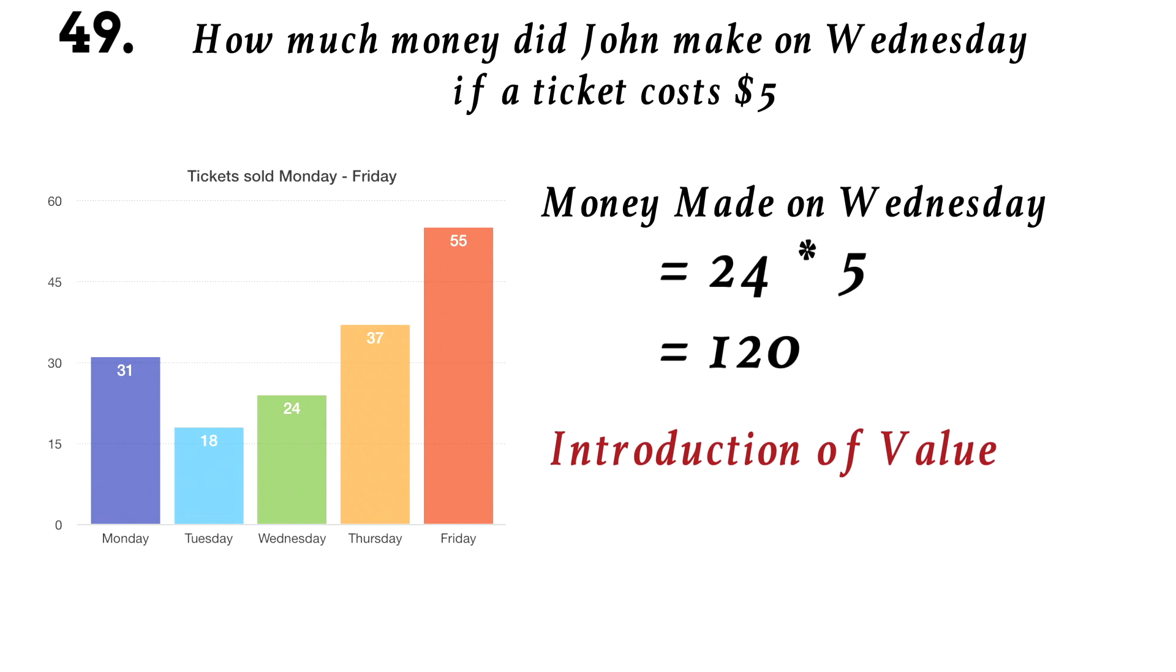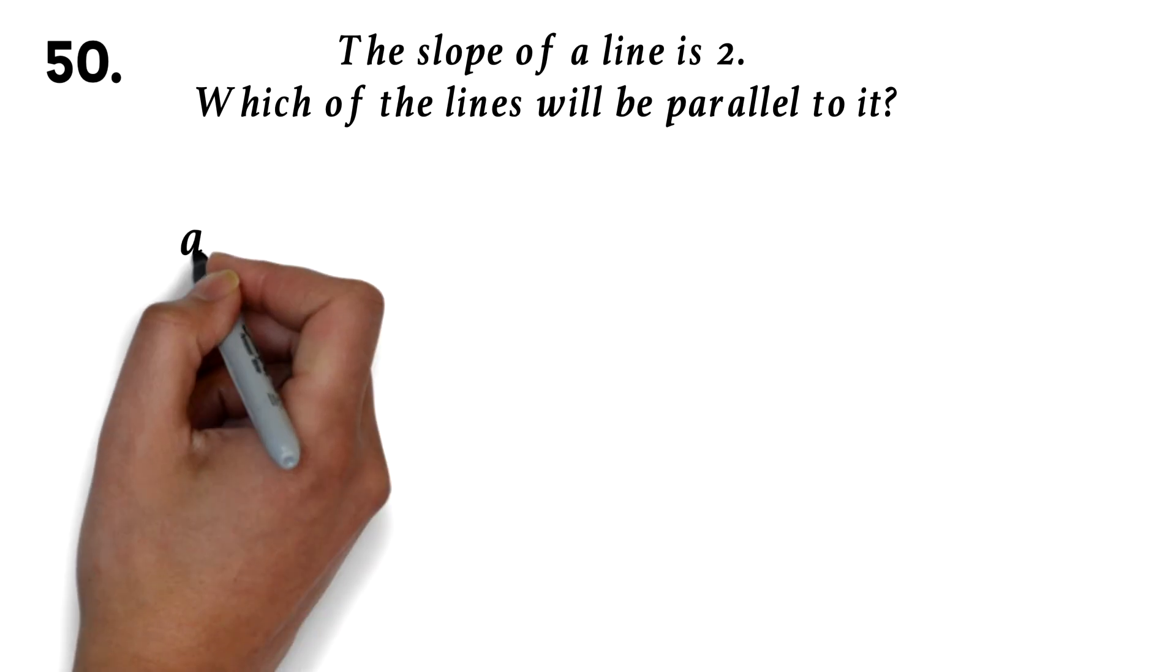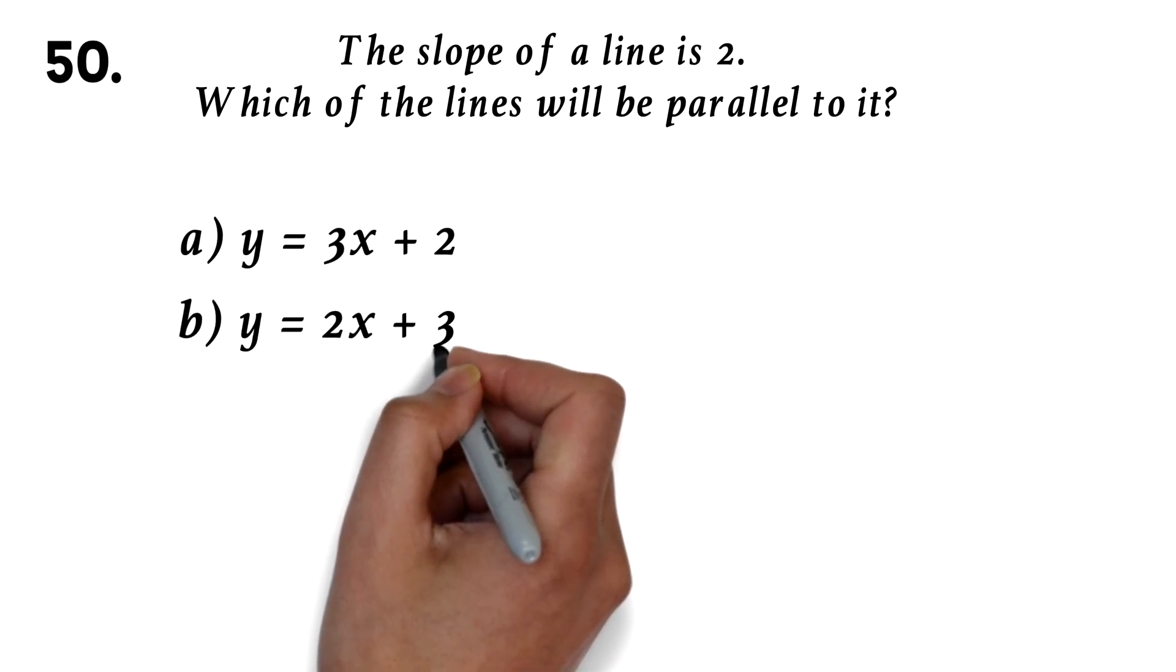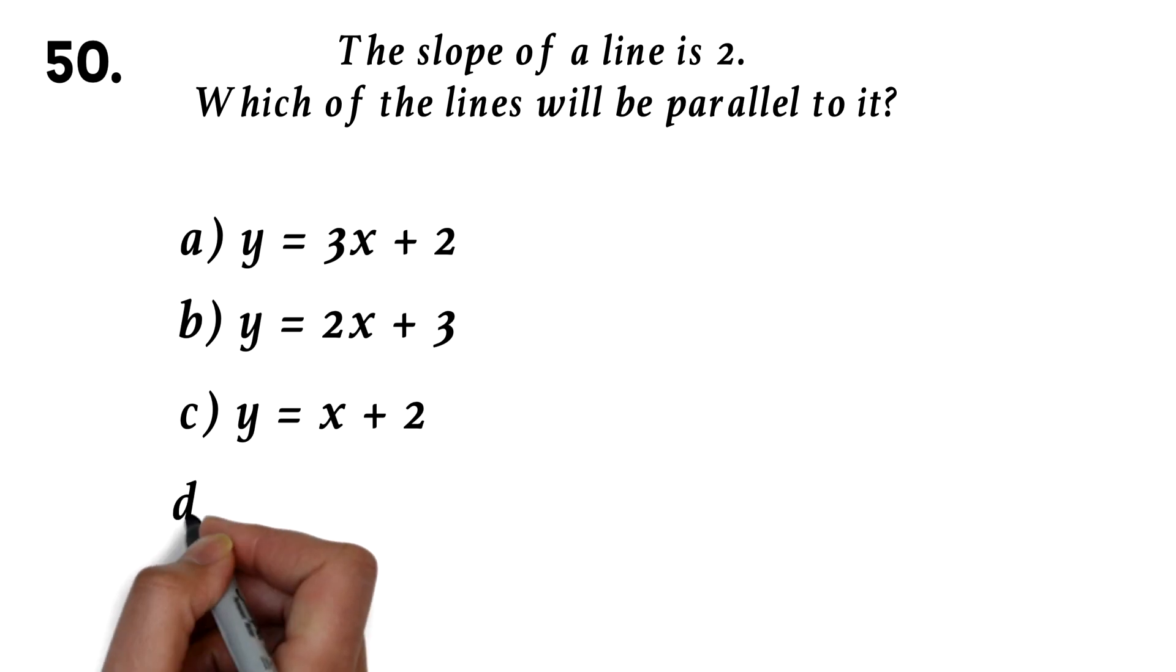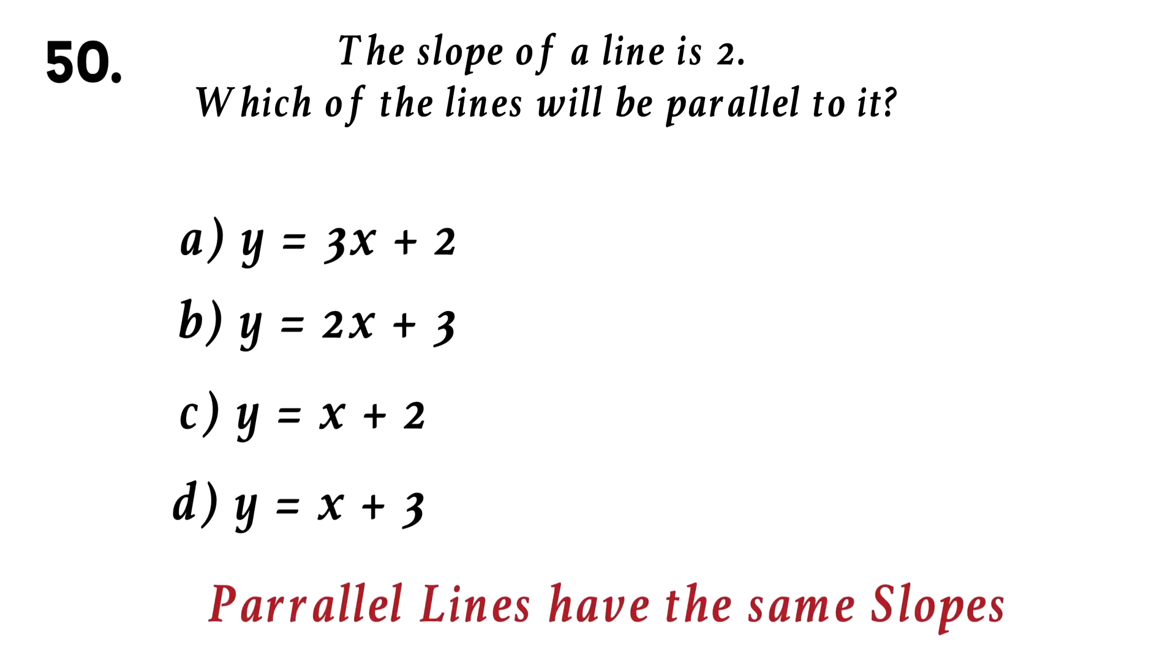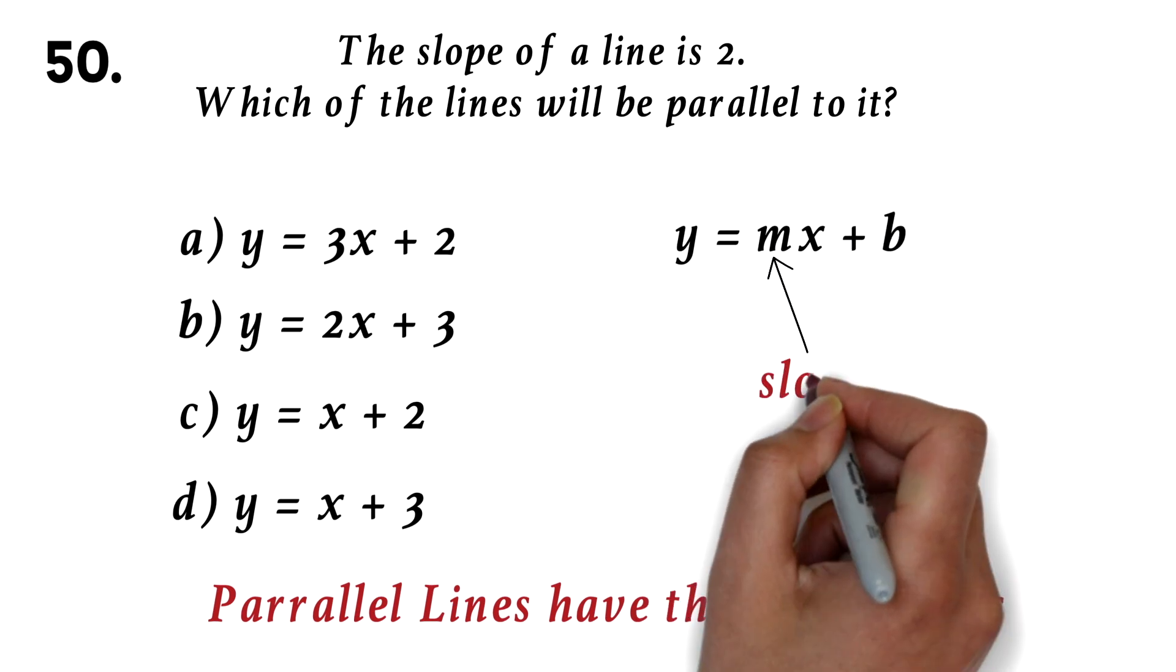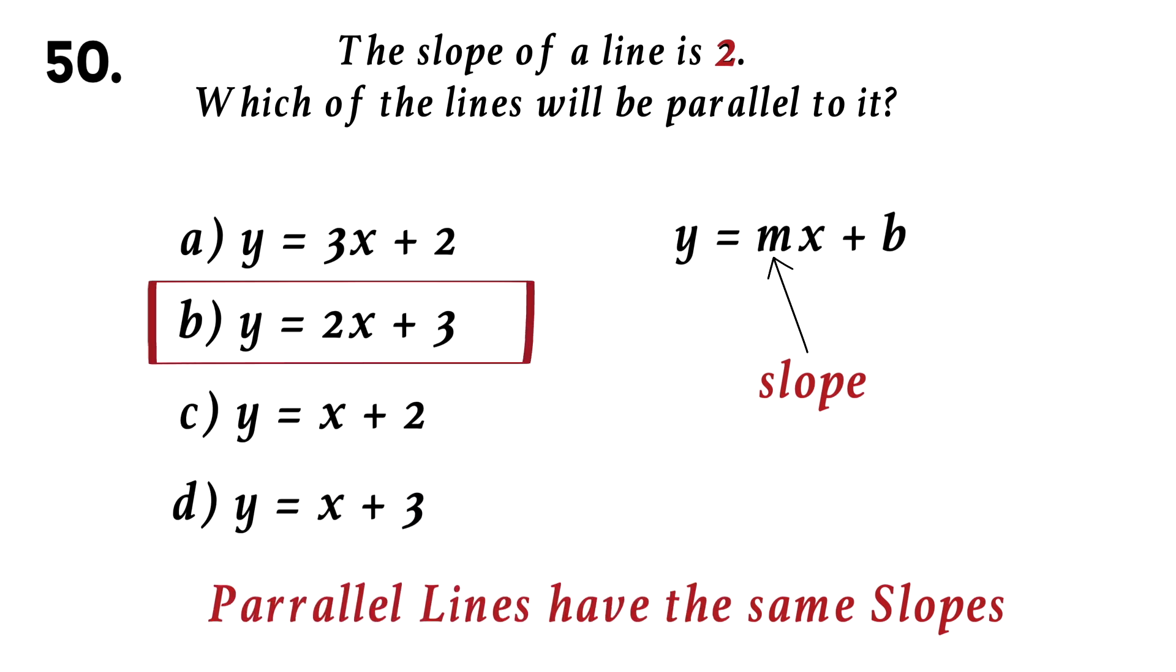Let's look at our final question. Question 50. The slope of a line is 2. Which of the lines will be parallel to it? Parallel lines have the same slopes. All the answers are in the slope-intercept form of the equation of a line. That's mx plus b. In this form, the number with the x is the slope. The slope of the line is 2. So the answer is b, since b also has a slope of 2.